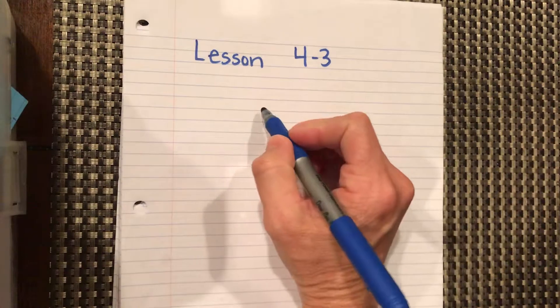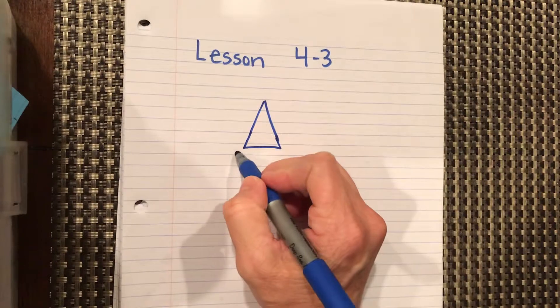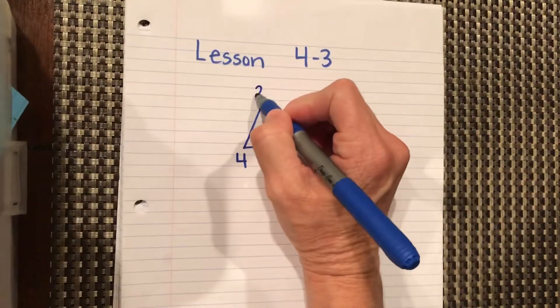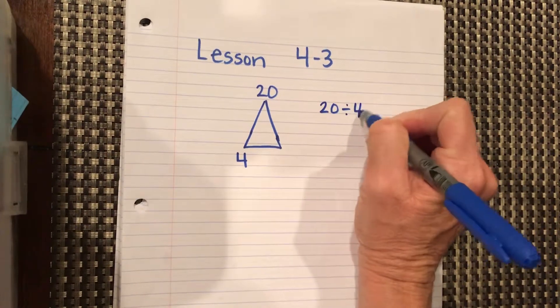So what we want to do is think about our fact family. So if we have 4 and 20, let's say they say to us, you have 20 and you want to divide it by 4.